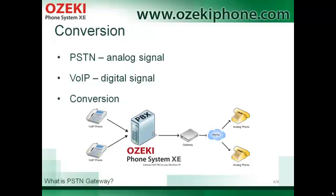VoIP and PSTN networks use different kinds of signals. While IP networks carry digital signals, the public switched telephone network carries analog signals. A PSTN gateway connects the two types of networks together, so it has to convert signals to the proper format.